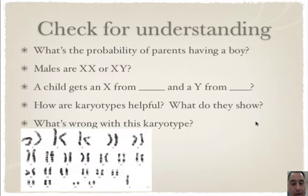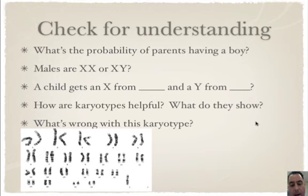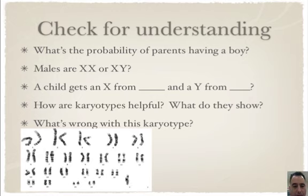The probability of parents having a boy is 50-50. A boy gets an X from mom and a Y from dad. Karyotypes are helpful because they show the sex and the health of your child. In another karyotype example, all pairs look fine, but there's only one X chromosome instead of two sex chromosomes. So it has only 45 chromosomes — that condition is called Turner syndrome.